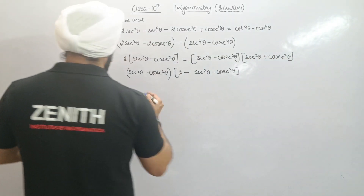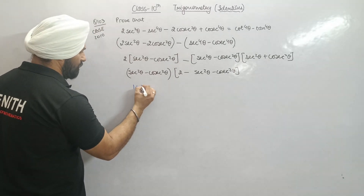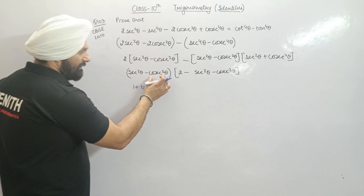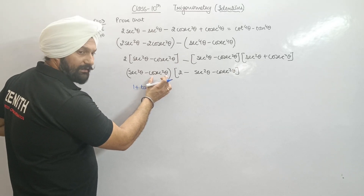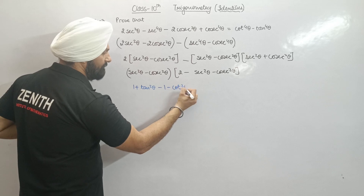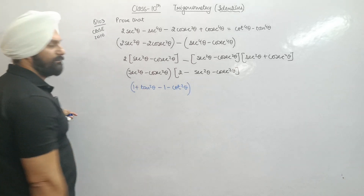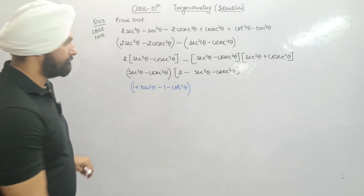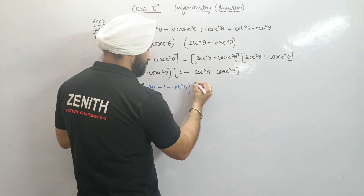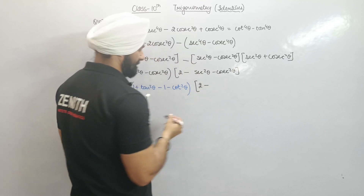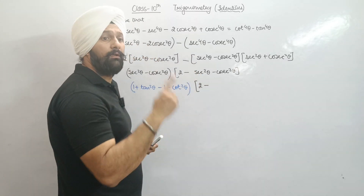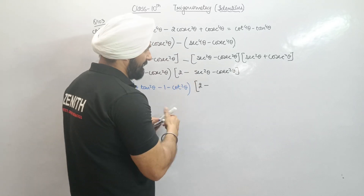Now sec²θ equals 1 plus tan²θ, so this becomes 1 plus tan²θ. And for the cosecant part, minus cosec²θ equals minus(1 plus cot²θ), so outside the minus sign, inside we get 1 plus cot²θ. This substitution is key to simplifying the expression.